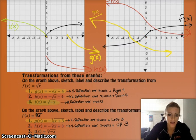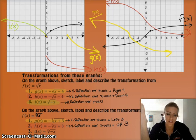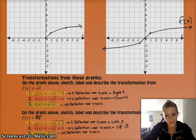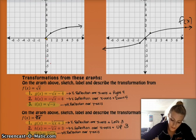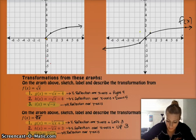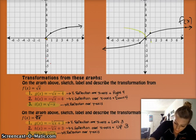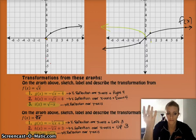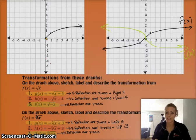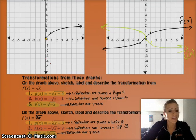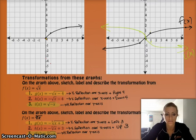Lastly, we have i(x), which is the cube root of negative x. The negative is on the inside, which means it's a horizontal reflection over the y-axis. If I take my original function f(x) on the right and reflect it over the y-axis, the point (1, 1) becomes (negative 1, 1), and the point (negative 1, negative 1) becomes (1, negative 1). The top part reflects to the left and the bottom part reflects to the right — that's your i(x) function. And in this case, with the cube root, a reflection over the y-axis happens to look the same as a reflection over the x-axis, which is not the case with the square root.